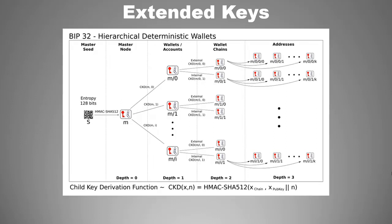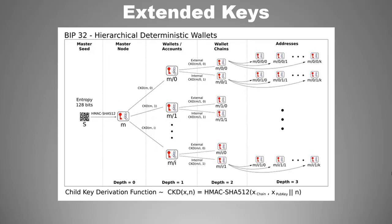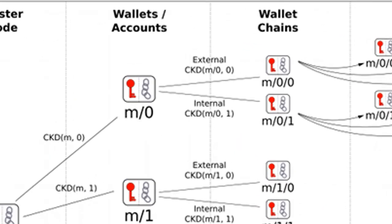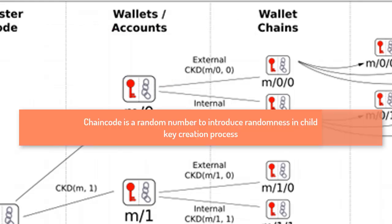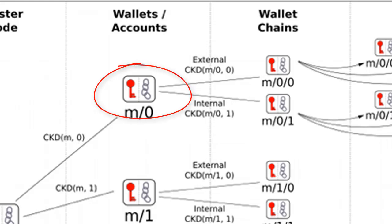Here in this diagram, you are seeing a tree-like structure of keys. If you see it closely, each of these boxes is showing a key along with something called chain code. So each of these is a pair of key and chain code. Chain code is a random number to introduce randomness in the child key creation process.